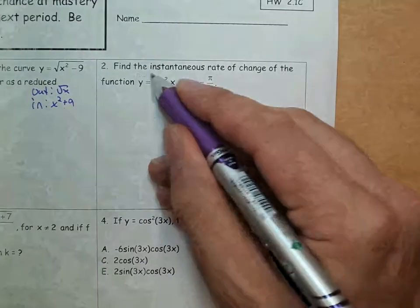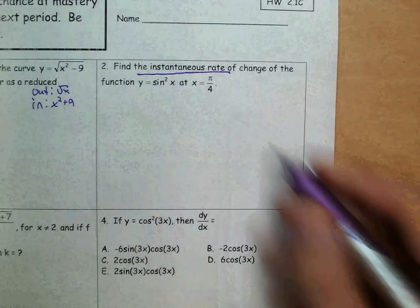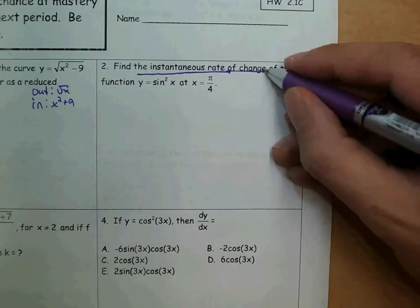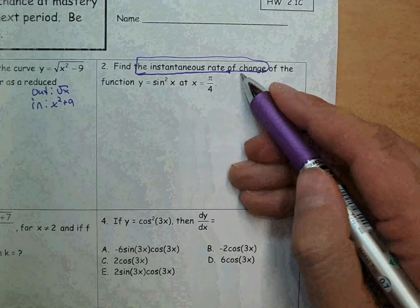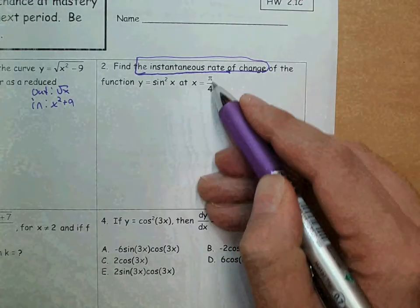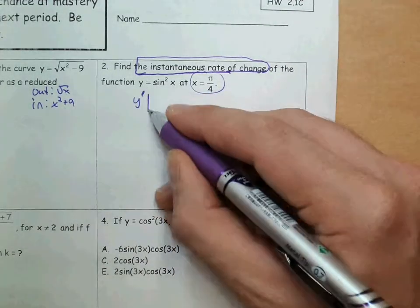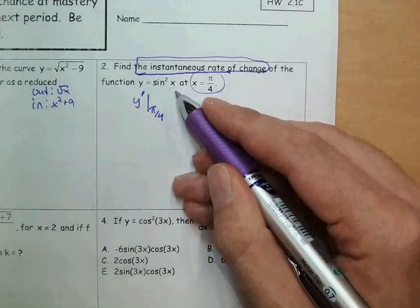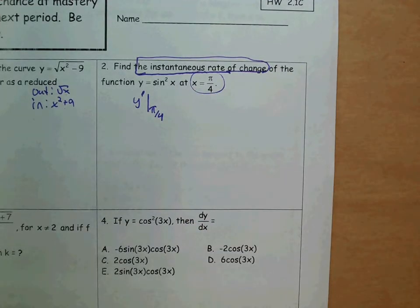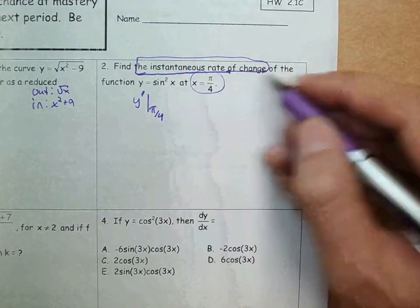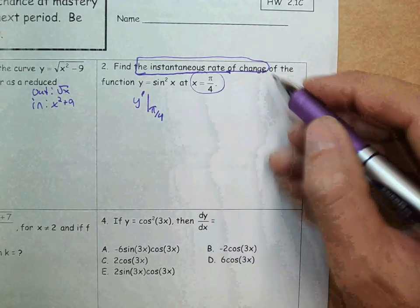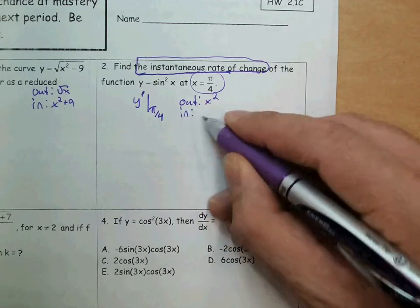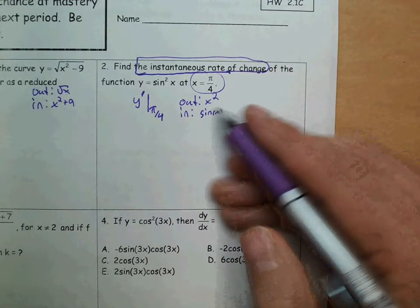The next one: find the instantaneous rate of change. This is a way of saying to find the derivative — the derivative tells you the instantaneous rate of change. These are words you want to recognize. It wants you to find it at x equals pi over 4, so again you're going to find the derivative and plug in pi over 4. When you do this derivative, you should see it's sine squared of x. Sine squared of x isn't a memorized derivative, but this is a function within a function. Sine of x is being squared, so the outside function is x squared and what's inside is sine of x. You'll need to use the chain rule.